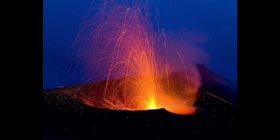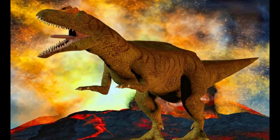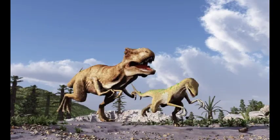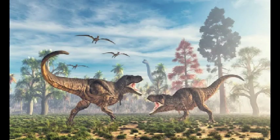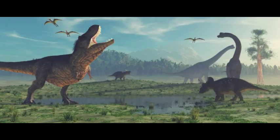Continuing our exploration, we encounter the Triassic-Jurassic Extinction that happened around 201-214 million years ago. During this event, the diversity of marine life diminished, and specific groups ceased to exist. Decreased oxygen levels, climate change, and volcanic activity were key factors contributing to this mass extinction. Importantly, it marked the emergence of new groups, including early dinosaurs.